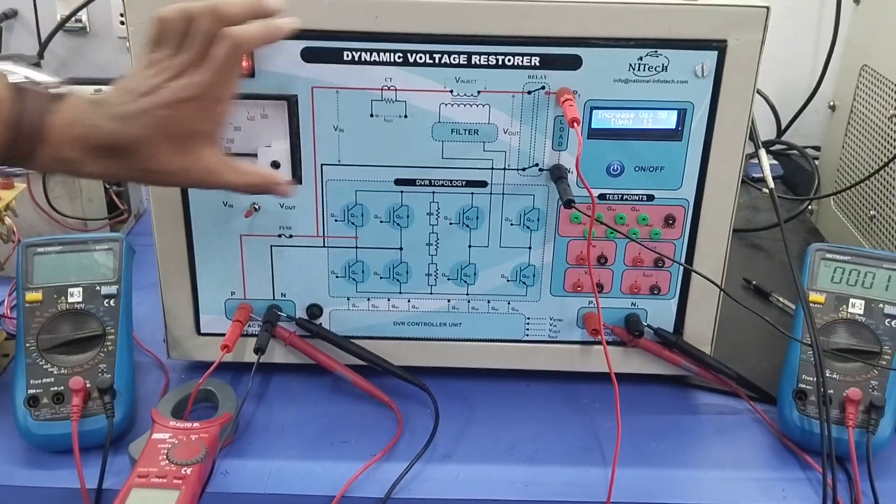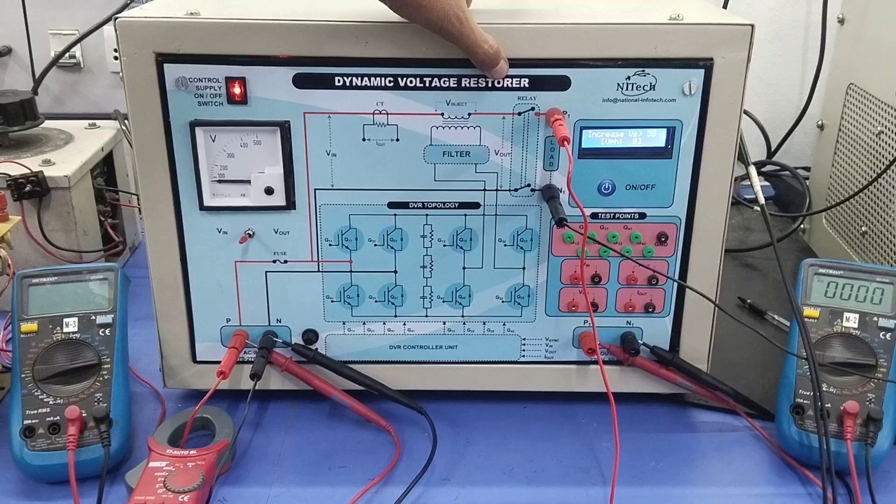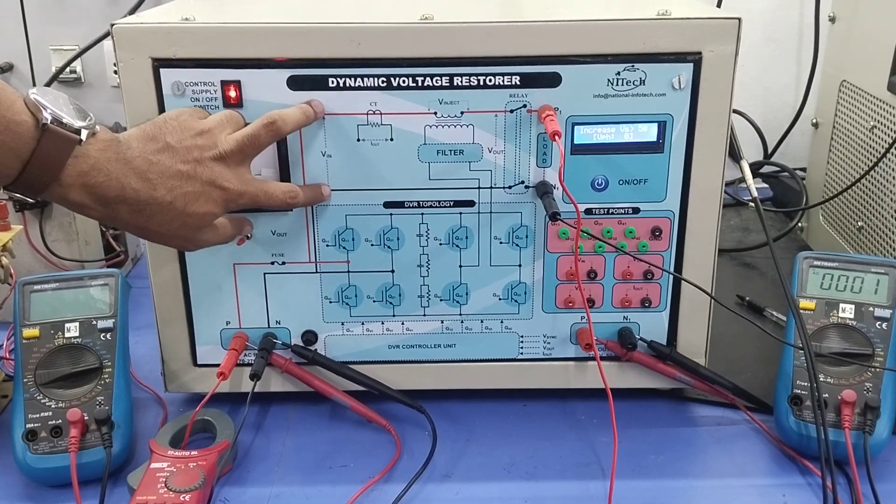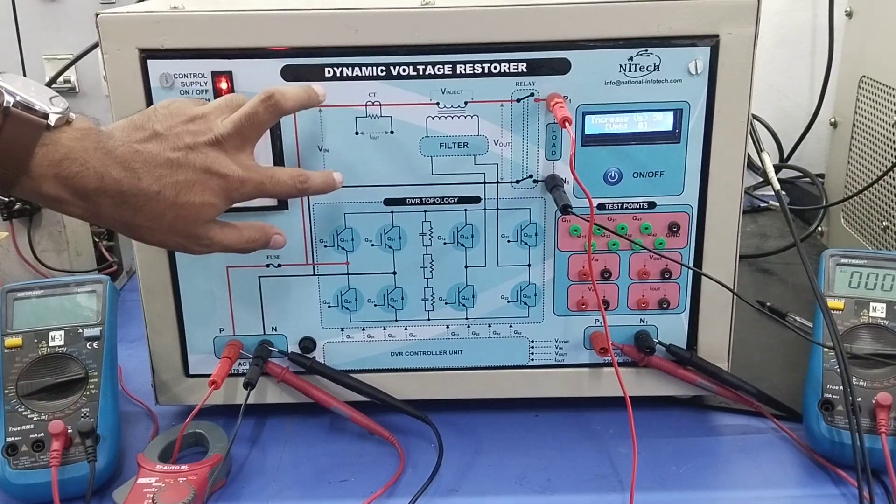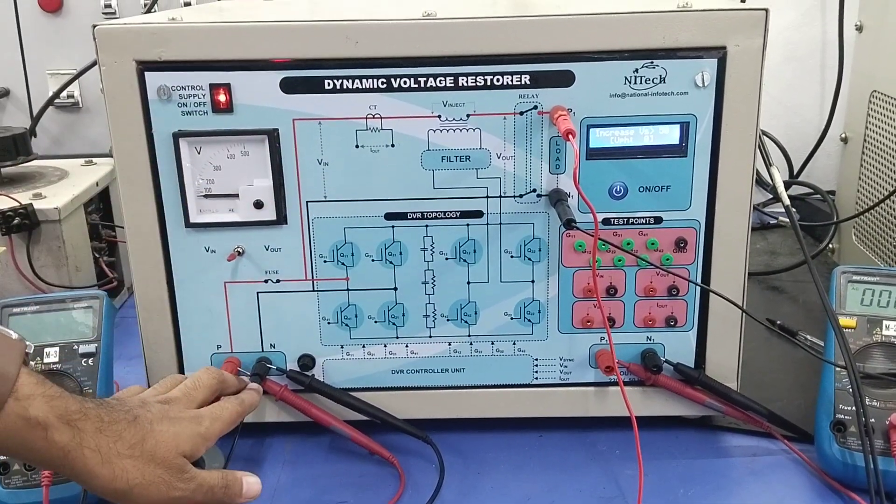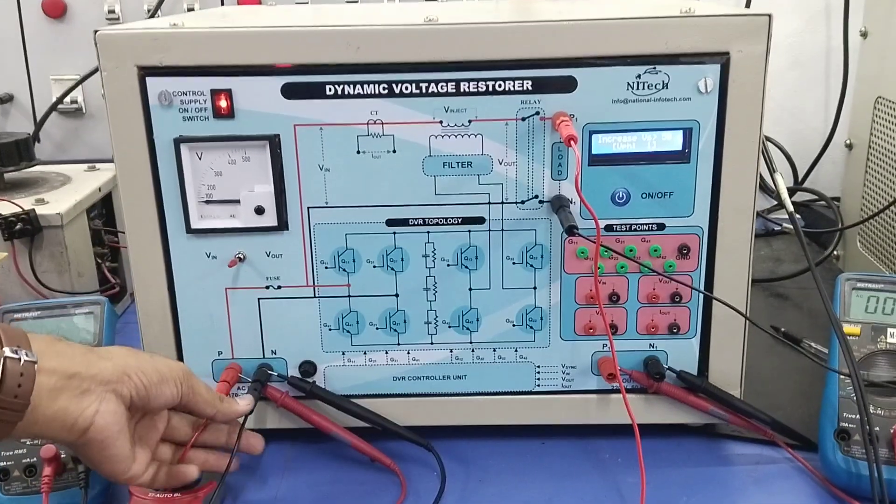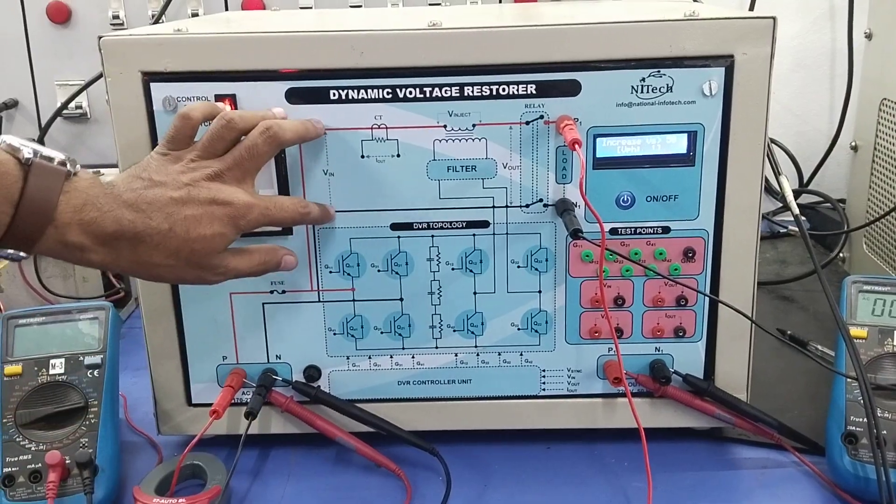Now if we come here back, we need to observe the performance of this dynamic voltage restorer. For that, we need to change the V_in dynamically. In general laboratory arrangement, we need dynamic voltage. To observe or create dynamic voltage, we have made this arrangement.